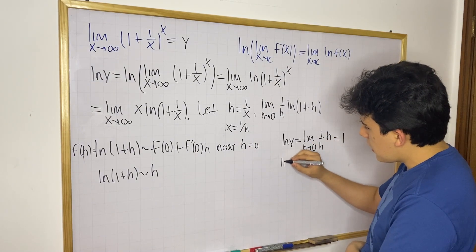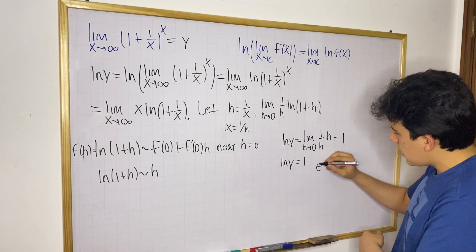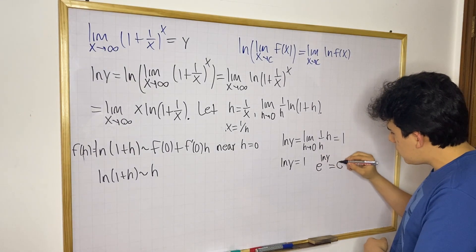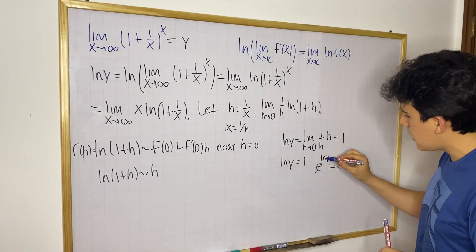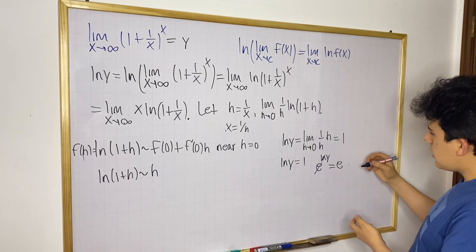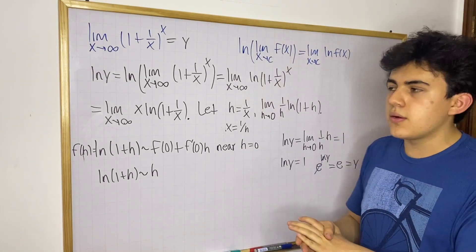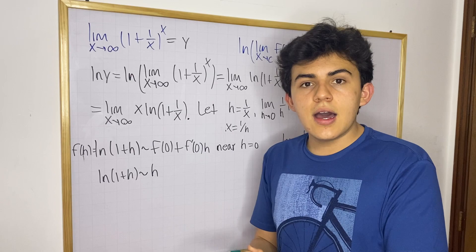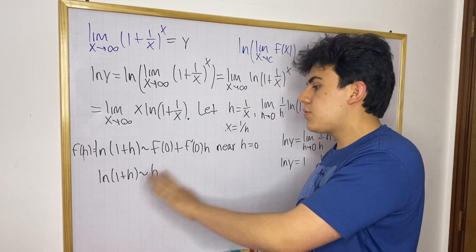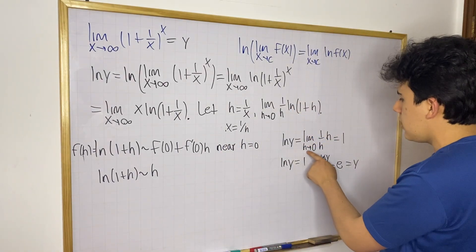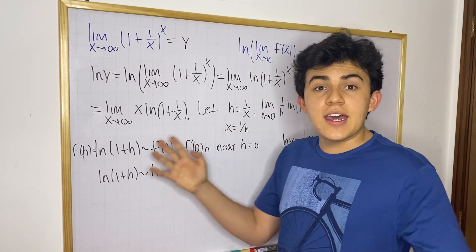We now have that the natural log of y equals 1. To find y, we raise e to both sides: e^(ln y) = e^1. By the property that e and ln cancel, we get y = e. That is the result we were expecting — the limit equals e. I just showed you the computation using this linear approximation, which works out beautifully because h is approaching 0 and the approximation is valid near 0.